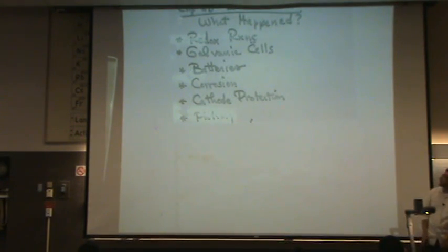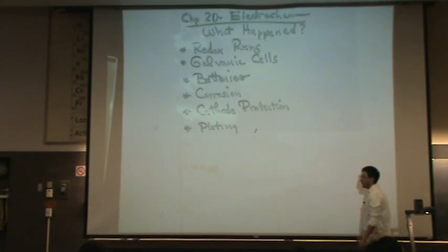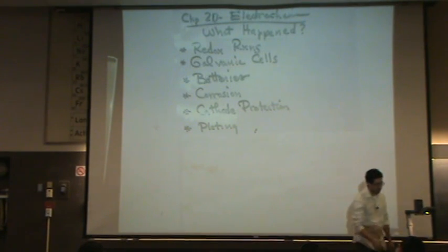Here's the plating specifically. So we can plate things. For example, galvanized nails are zinc and iron together because the zinc oxidizes first.